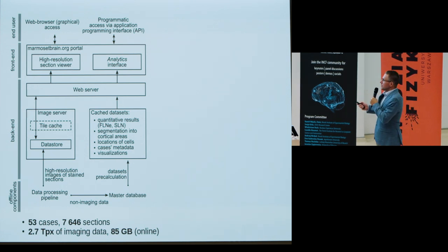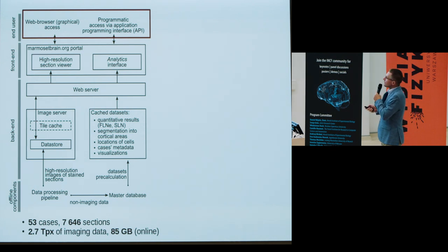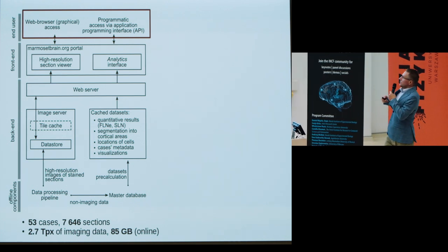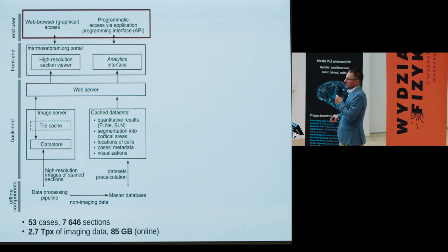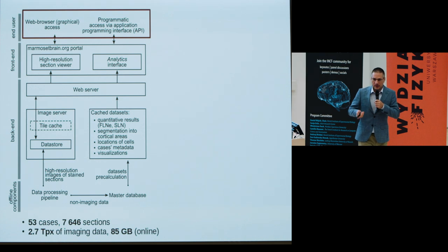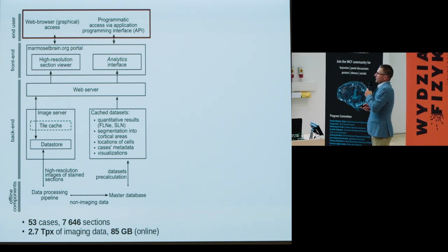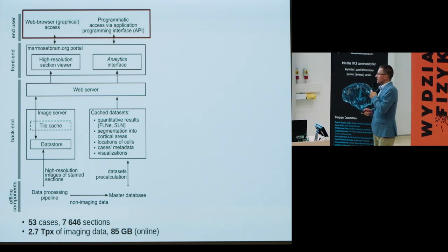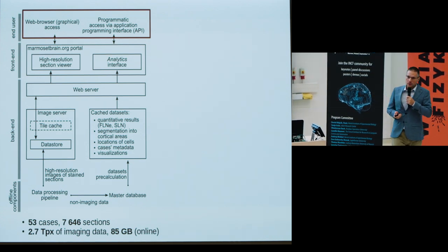Behind the portal, we provide two streams of data access: one through the web browser interface, and a second programmatic way through a dedicated application programming interface, allowing computers to fetch data and run any calculations of interest. There are 53 cases, translating to over 7,500 individual sections—approximately 2.7 terapixels of imaging data—compressed to about 85 gigabytes for online serving.